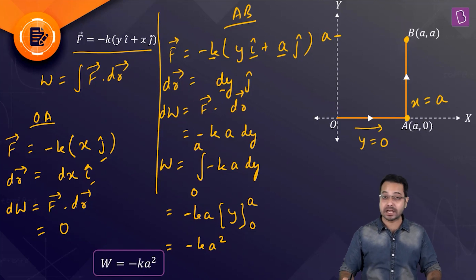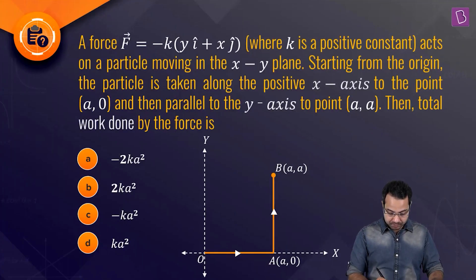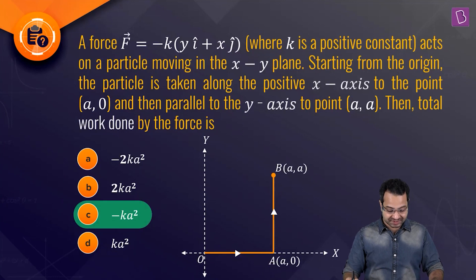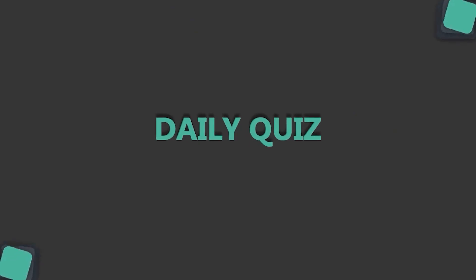Looking at the options, option C, −ka², is the correct answer.